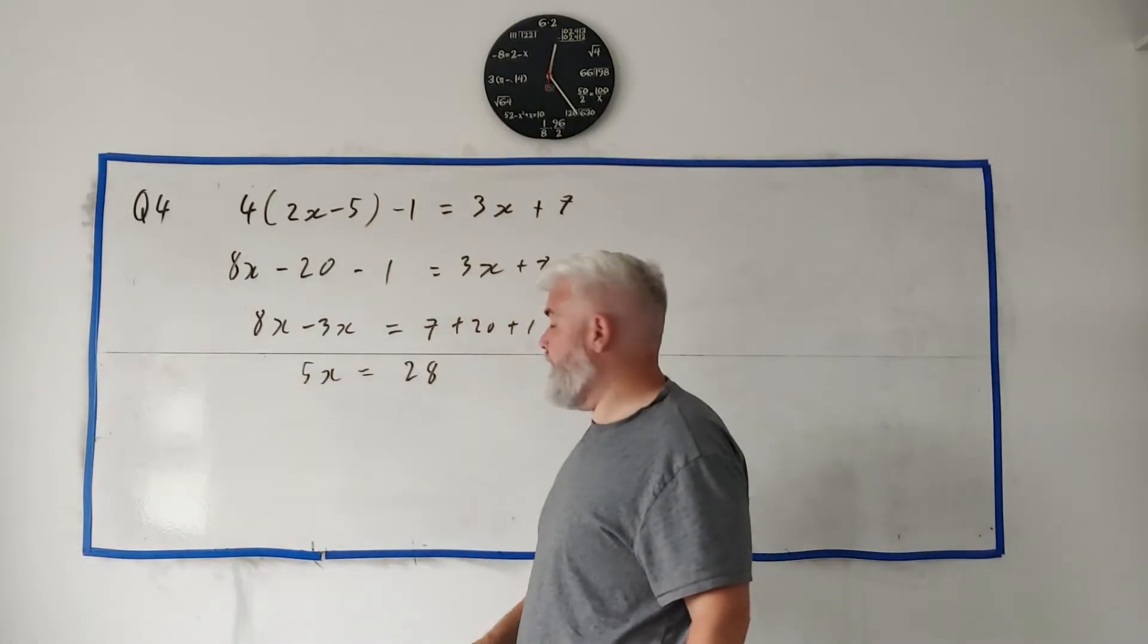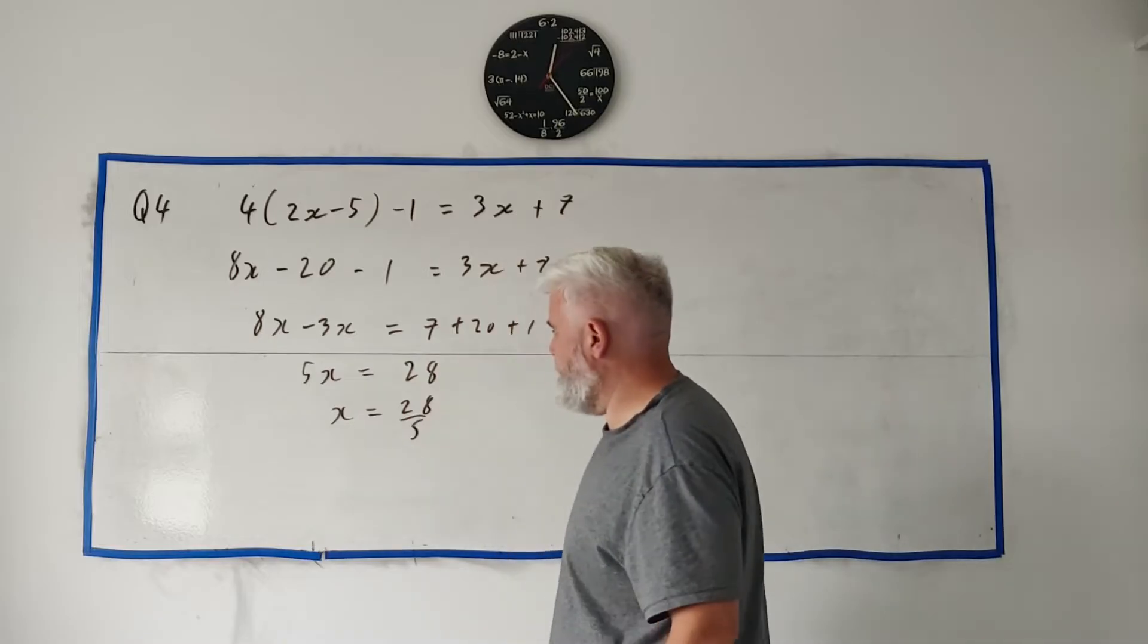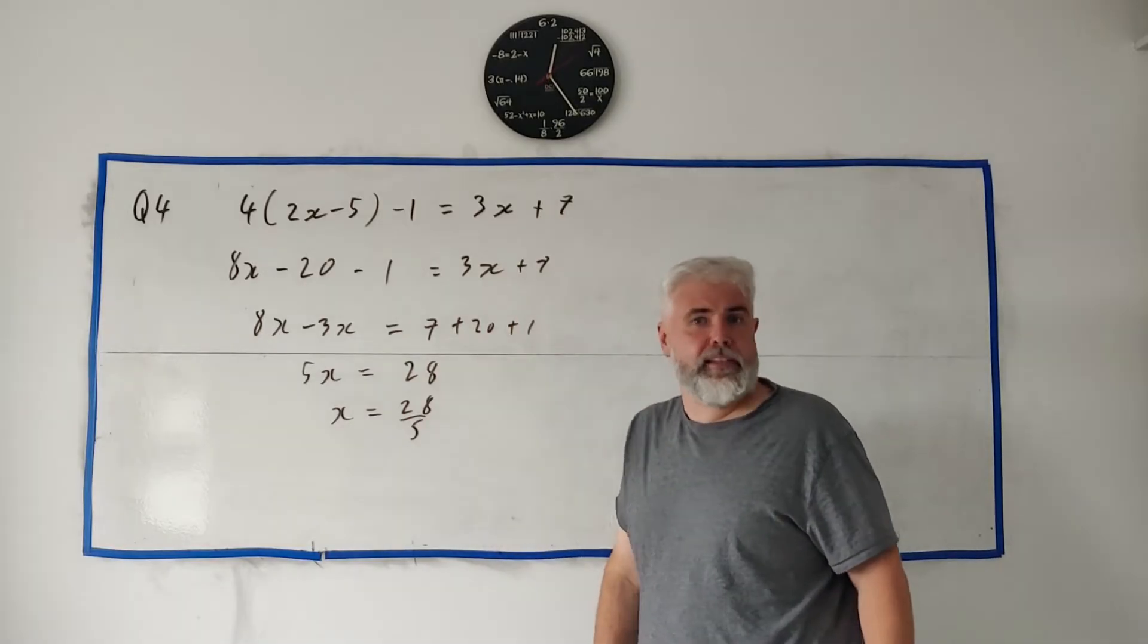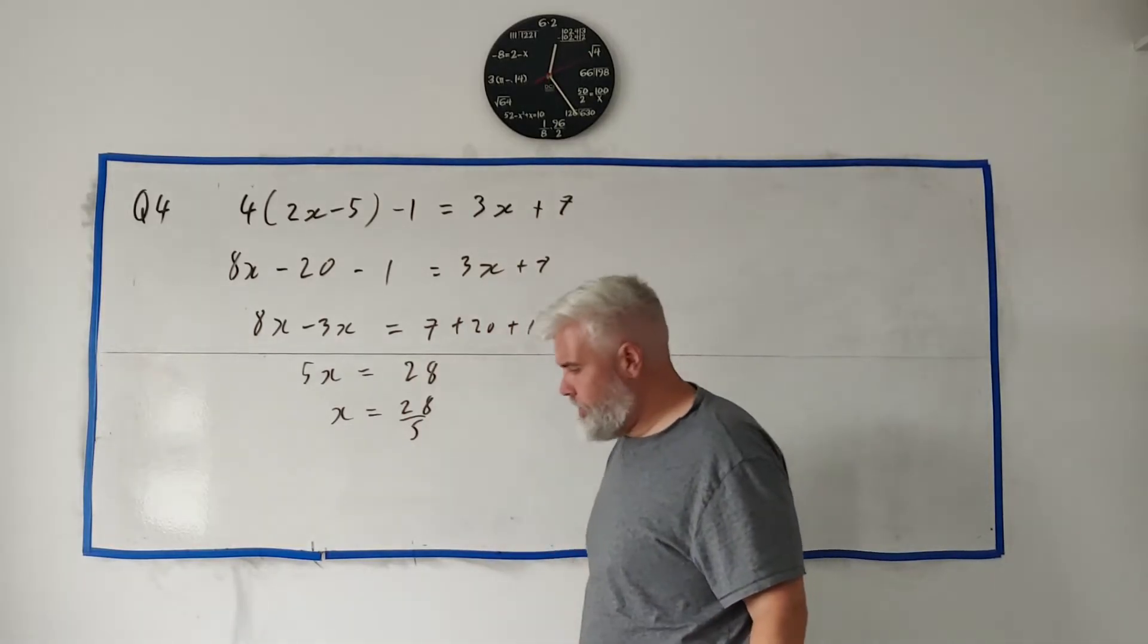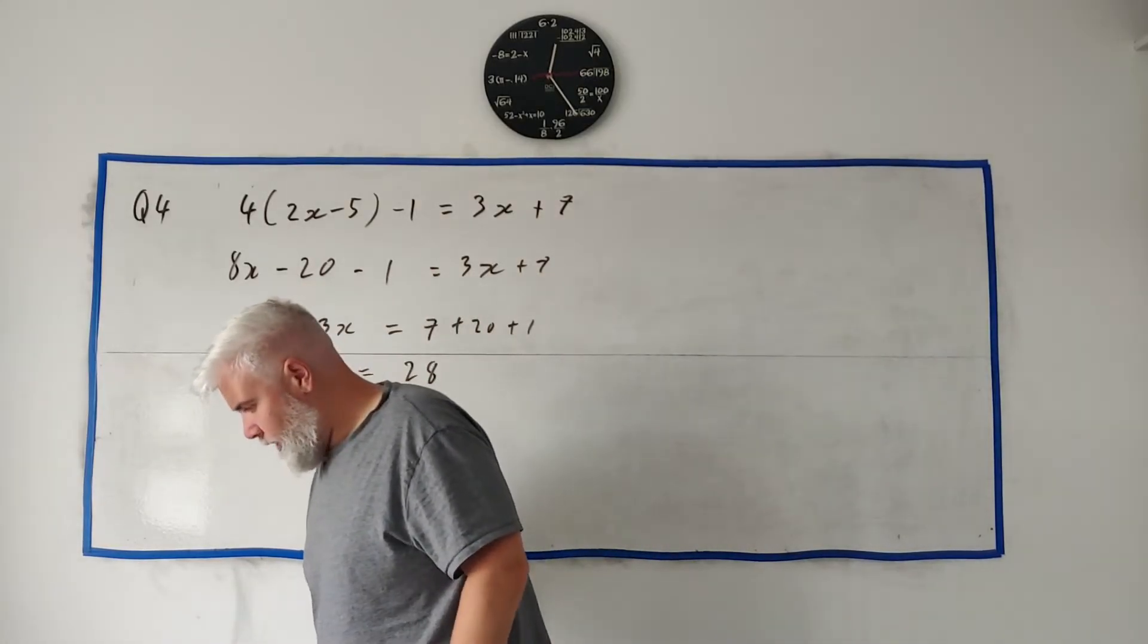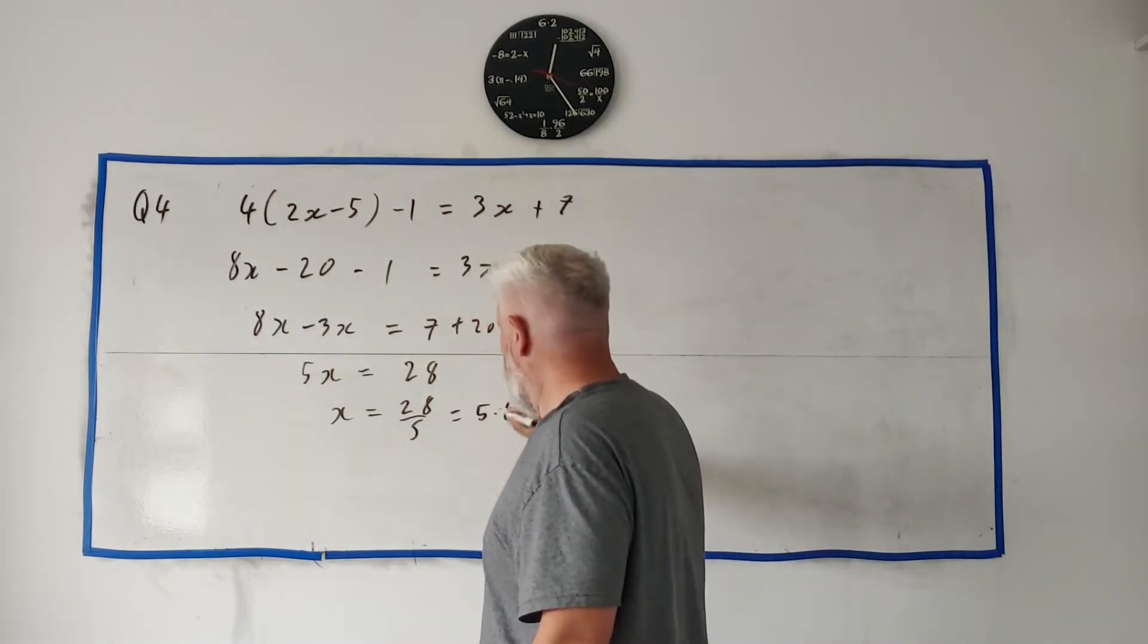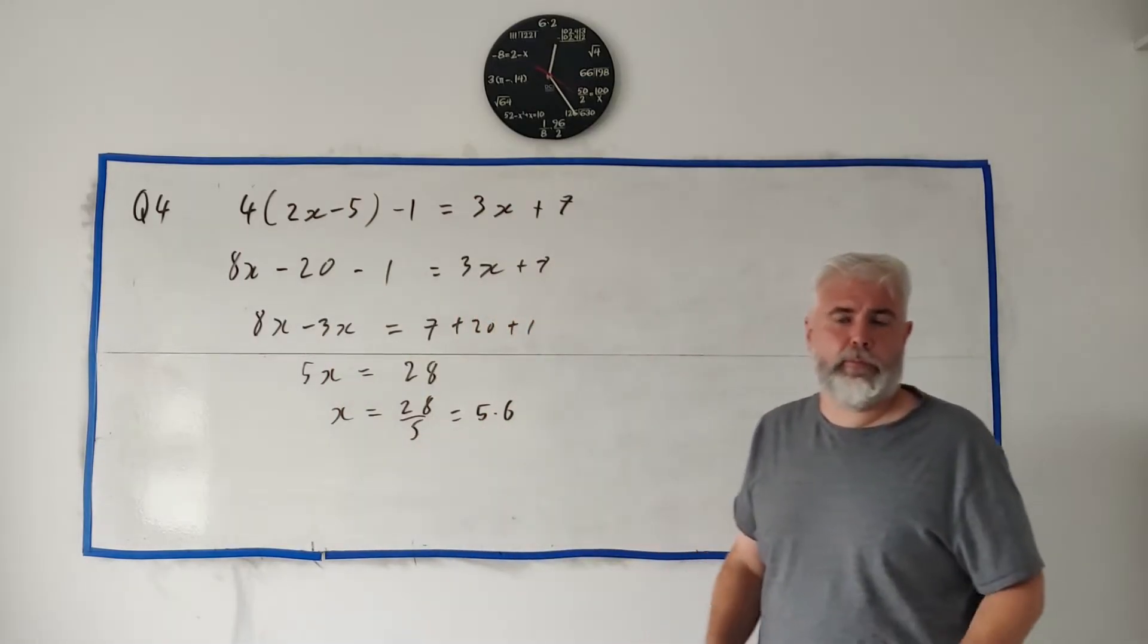Clean all this up, we get 5x is equal to 28. Divide both sides by 5, we get x equals 28 divided by 5, and that's it, that's the answer. We can leave it like this or 5.6, either of these is full marks for part A.